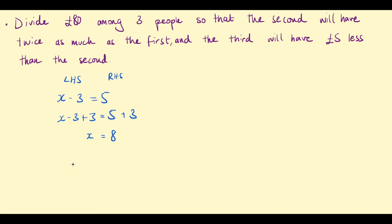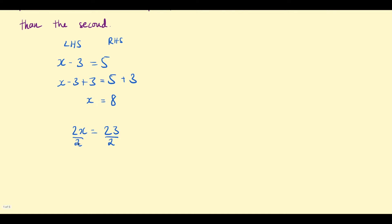Let's look at another example. We might have something like 2x equal to 23. This is saying 2 multiplied by x equals 23. Remember, in algebra, we don't usually write the multiplication sign. The inverse of multiplication is division. If I divide by 2 here, I'll just be left with 1x on the left. So, on the left I want to divide by 2, and I need to do the same thing to the right-hand side — divide by 2. Then, 2x divided by 2 is just 1 lot of x. 23 divided by 2 is 11.5. So that's the inverse of multiplication.